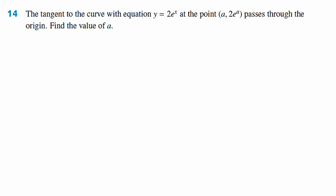Question 14 is from your exercise 10A. The tangent to the curve with equation y equals 2 times e to the power of x, at the point (a, 2e to the a), passes through the origin. Find the value of a. Now when I read this question, the first thing I see is 'passes through the origin.' What does that tell me already? What's the first thing you should pick up from that?